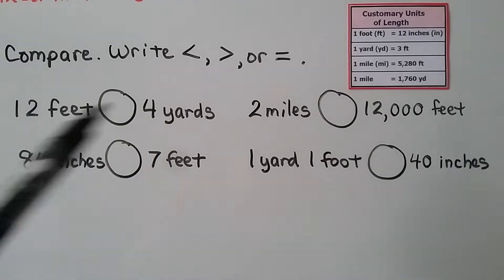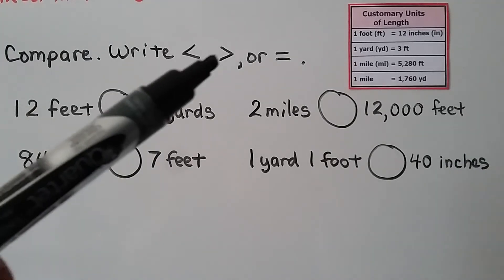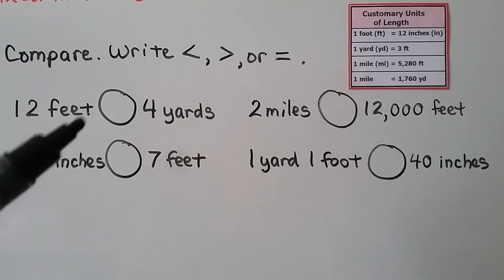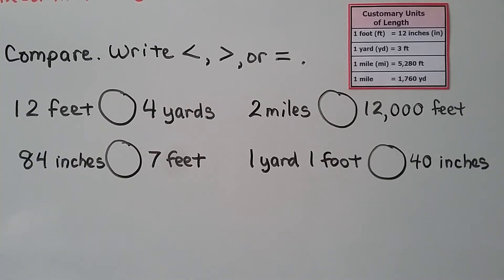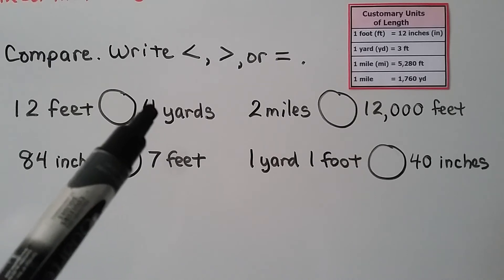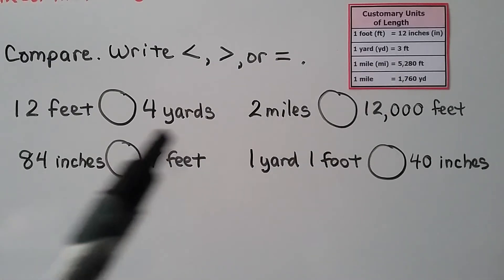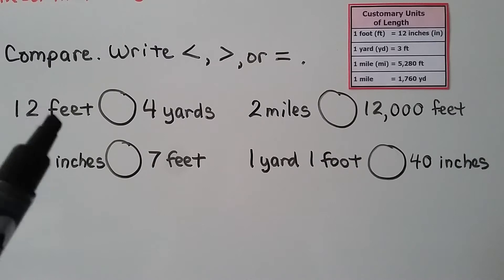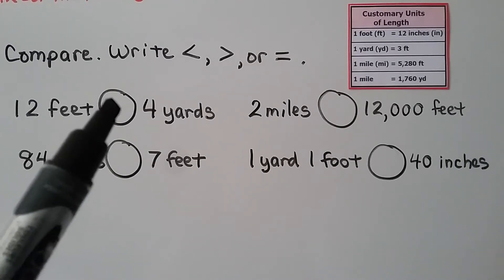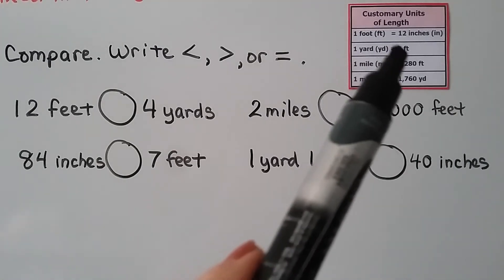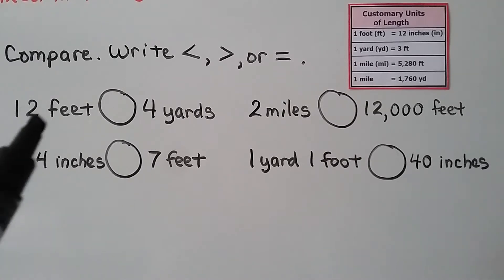We need to compare measurements and write less than, greater than, or equal to. We have our table to help. We have 12 feet and 4 yards. Since 1 yard is 3 feet, 4 yards equals 12 feet — 3 times 4 is 12. So 12 feet is equal to 4 yards.